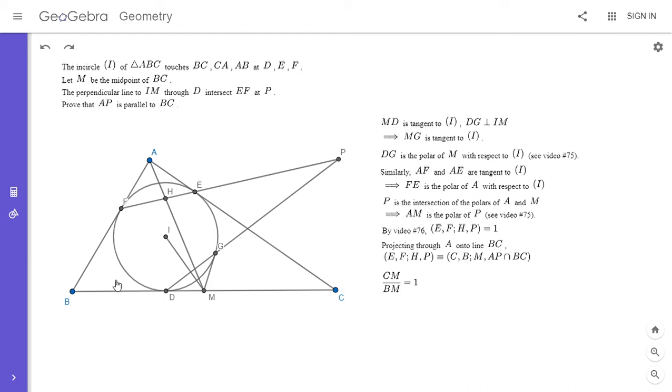So wherever AP and BC intersect, it has to divide the segment BC into a one to one ratio.